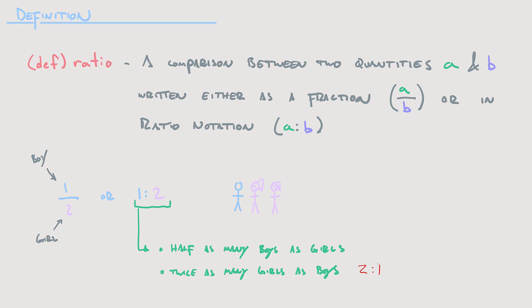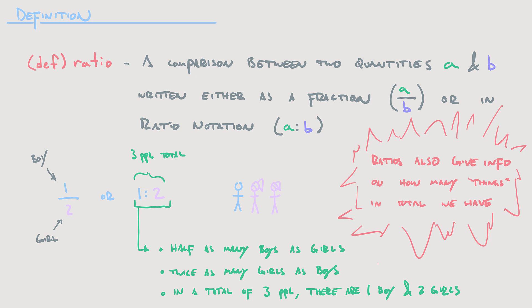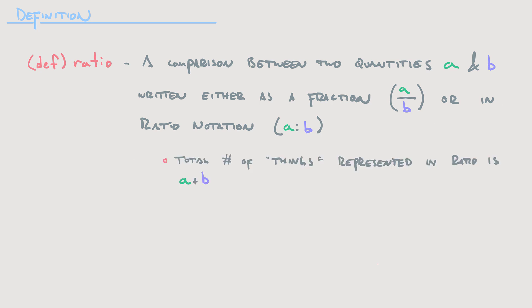So there's twice as many girls as boys — that's another thing we can get from this ratio. The third thing is that there are a total of three people in this group: one boy and two girls. If you add the two parts of the ratio together, you get what I'll call the whole or the total. The total number of things represented in a ratio is simply A plus B.